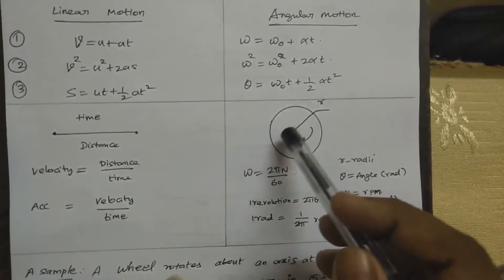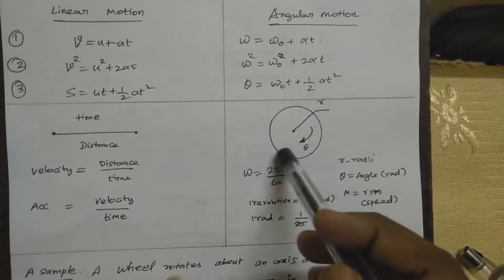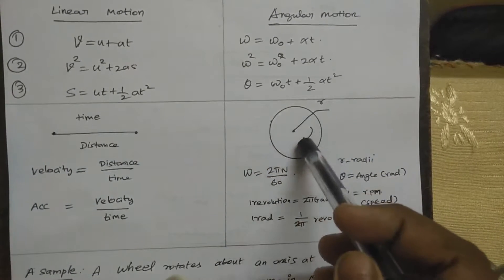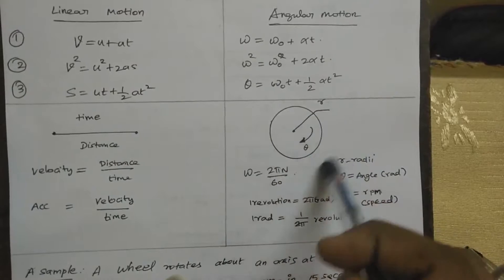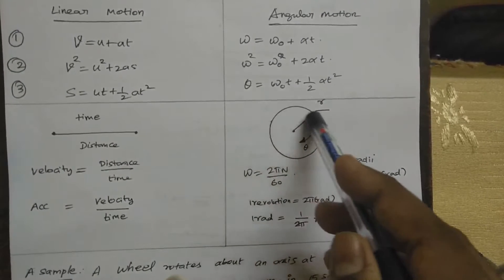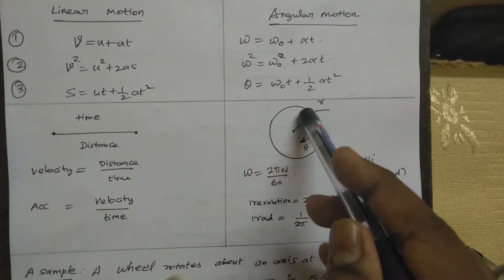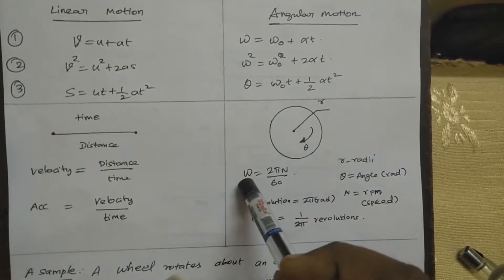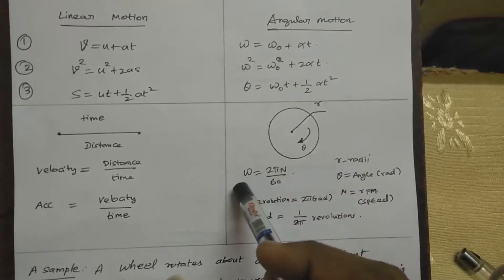That is angular motion. For example, one fan. Fan is one area. This is the radius. The velocity will be equal to 2πn into 60, where n is the RPM.